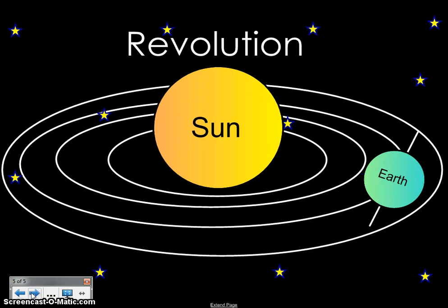The Earth is one of many objects that revolve around the sun. This motion is what determines the length of each year, which is 365 and one quarter days.